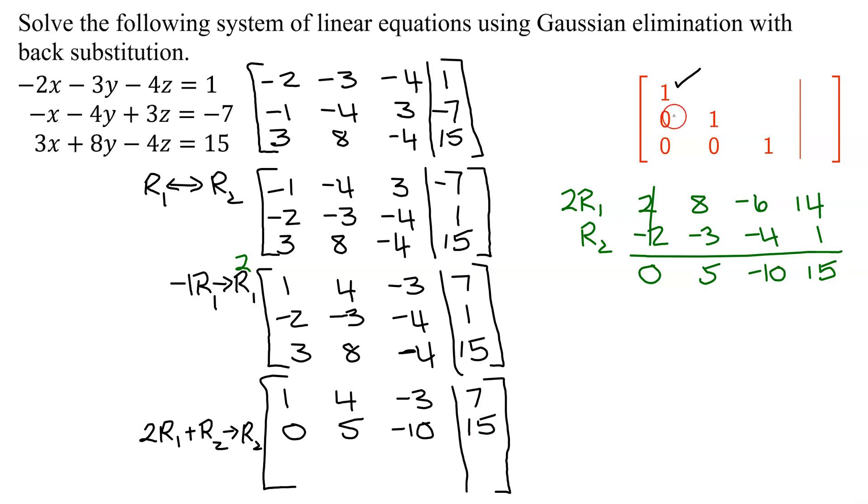So now I've got the 0 below the 1, I need to get a 0 below that, and we're going to do it by the same basic process. What's the opposite of 3? Negative 3. I'm going to multiply row 1 by negative 3, add it to row 3, and put the answer in row 3.